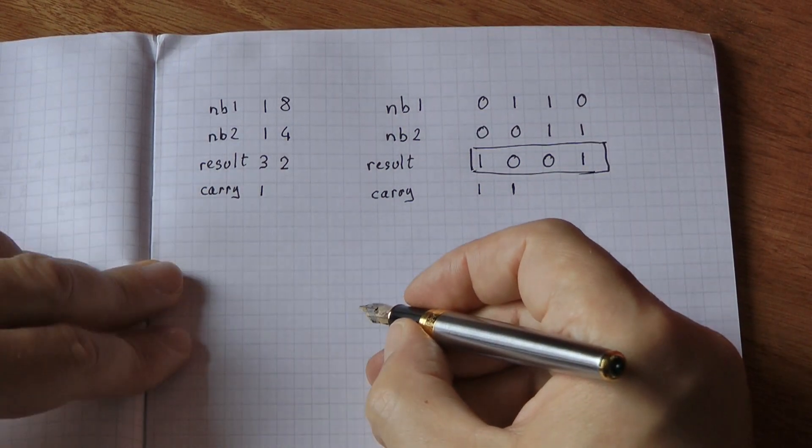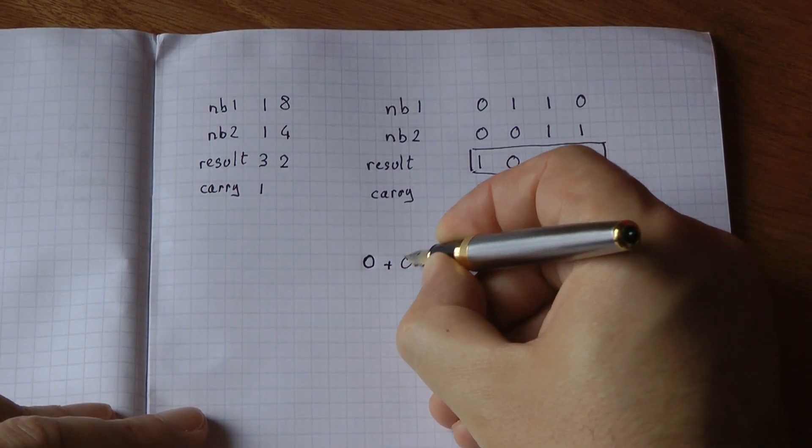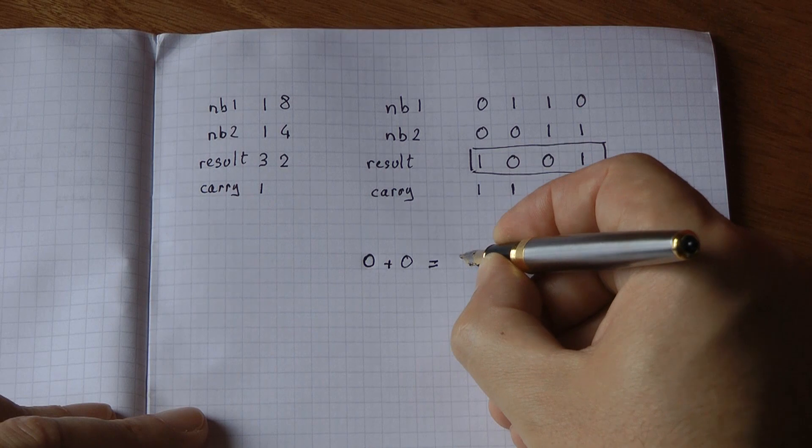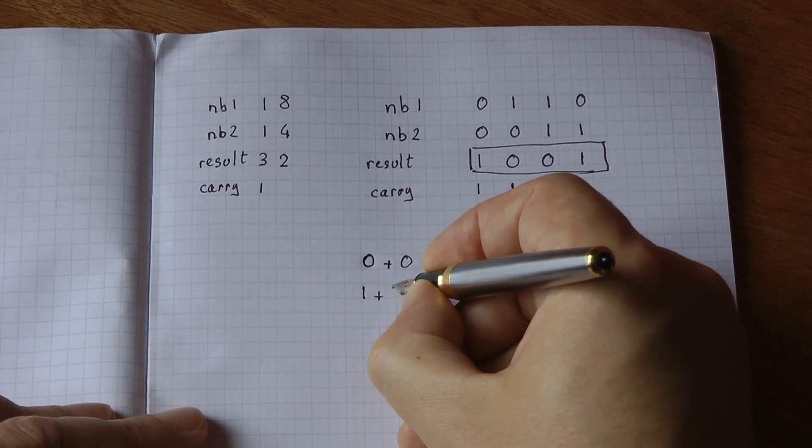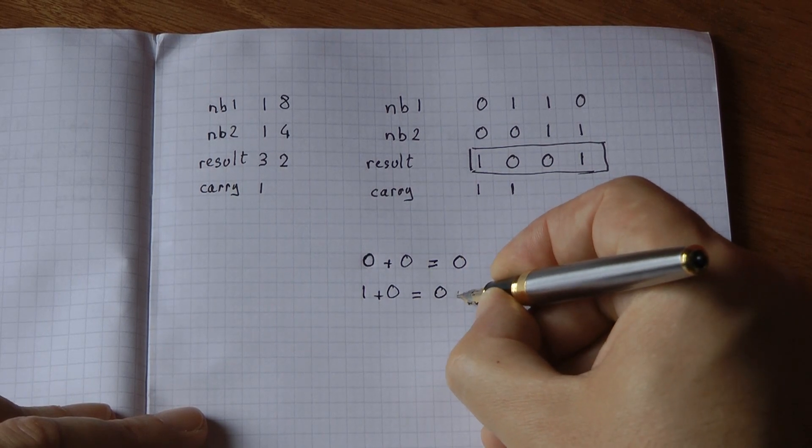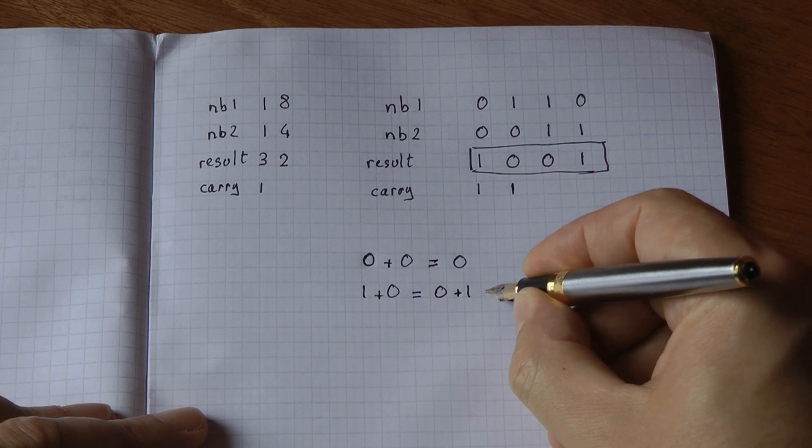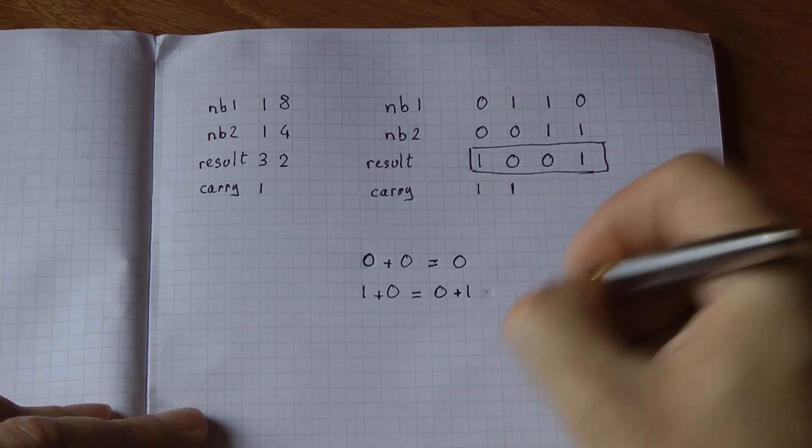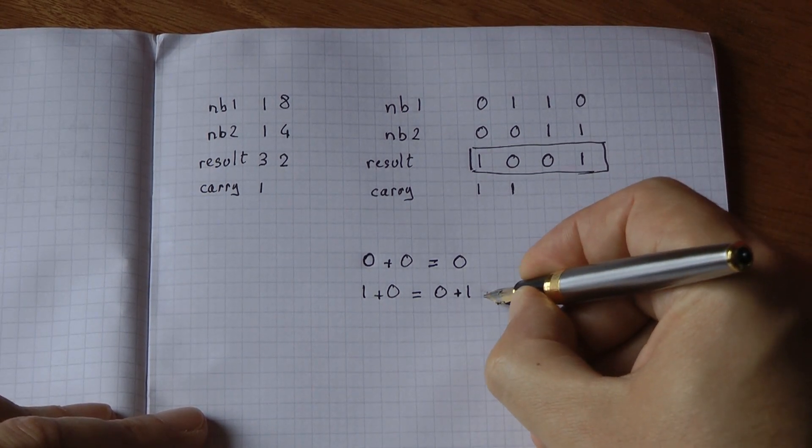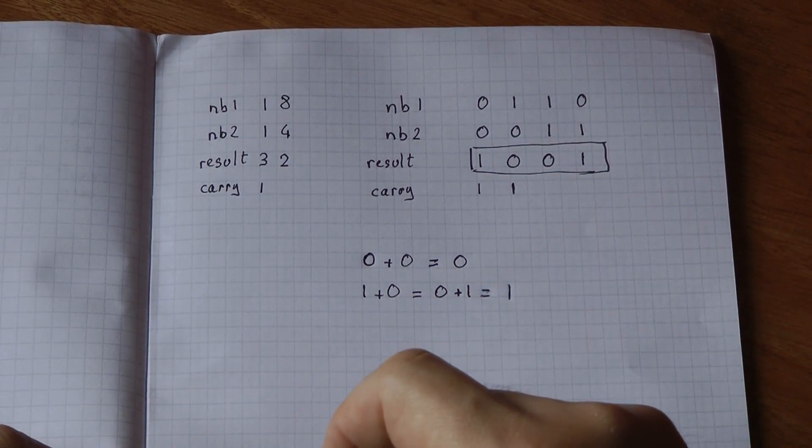To do your binary addition, you need to remember four results. 0 plus 0 is 0. 1 plus 0 is the same as 0 plus 1. 1 plus 0, same as 0 plus 1, and that result is 1.